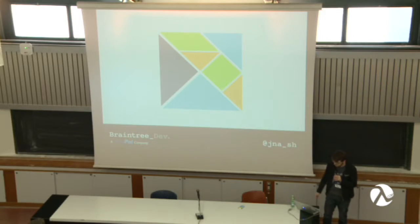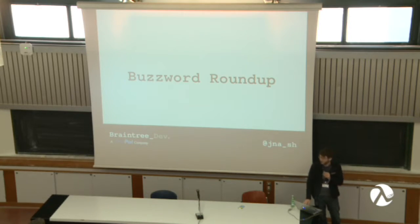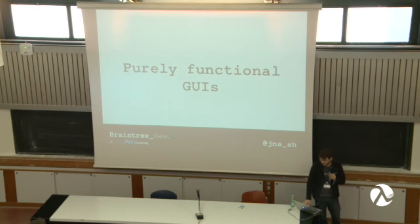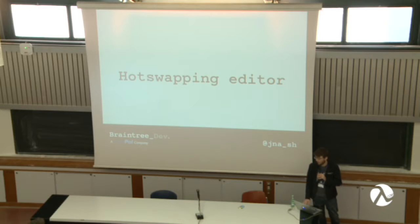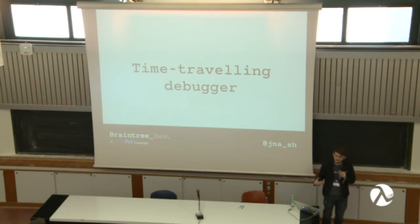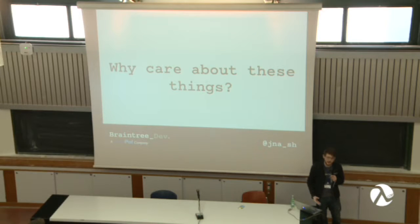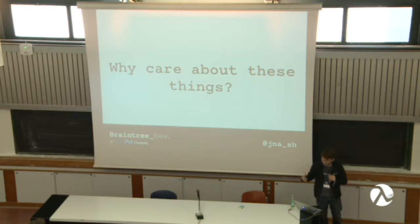This is the Elm logo. Elm is a bit of a buzzword-rife language. If you go for the buzzword roundup of what Elm does: it's functional reactive, it has purely functional GUIs, it has a hot-swapping editor, it has a time-travelling debugger. All these things sound very impressive and very vague. We'll cover what they all mean, but just from a top overview — why should you care about these things? Why do you want a language with all these amazing, bizarre-sounding features?